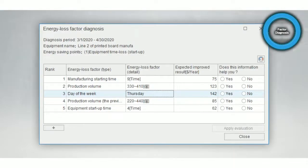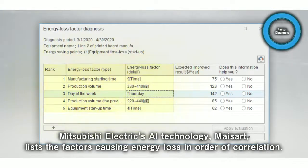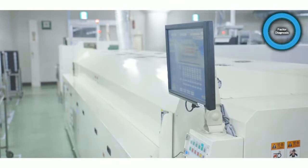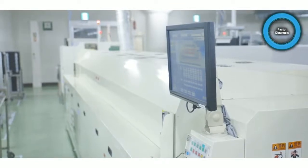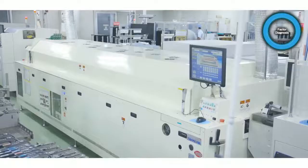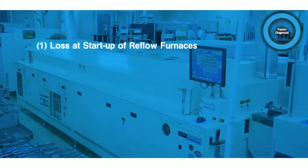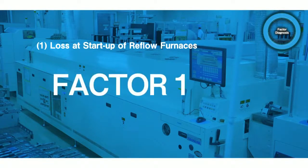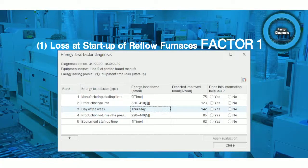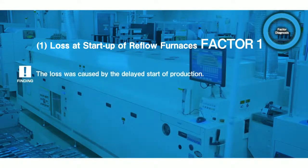Based on information such as date and time, production, and more, the factors causing energy loss are listed in order of correlation and visualized with the expected improvement effect. By utilizing this function, two factors causing the loss were identified. The most critical factor suggested as the cause of loss was the production start time between 9 and 10 a.m. It was assumed that there was loss when the production start time was late compared to the startup time of the reflow furnaces.